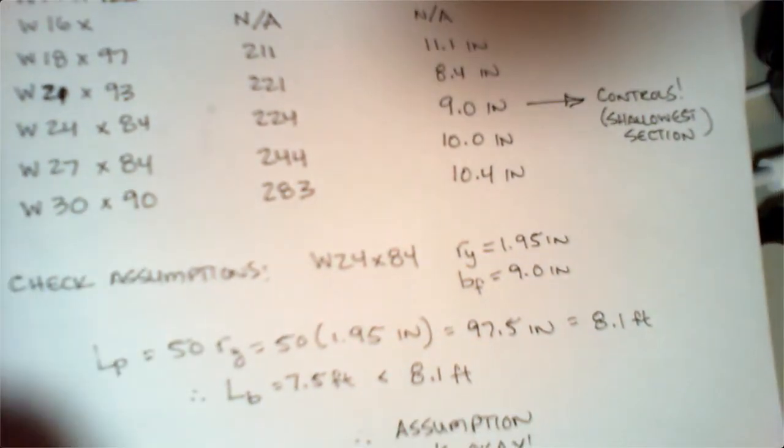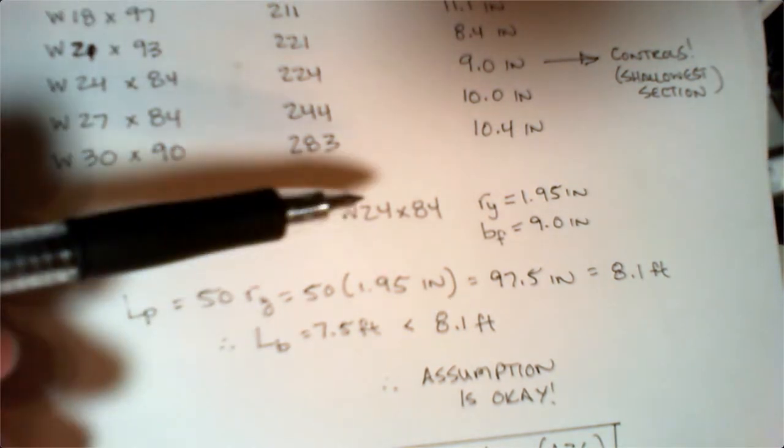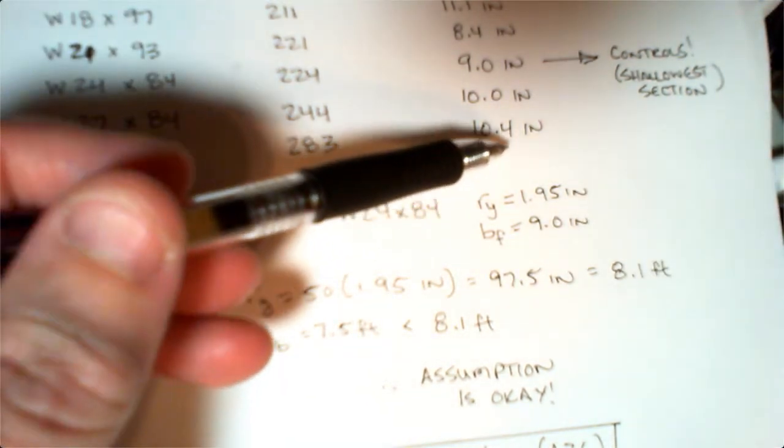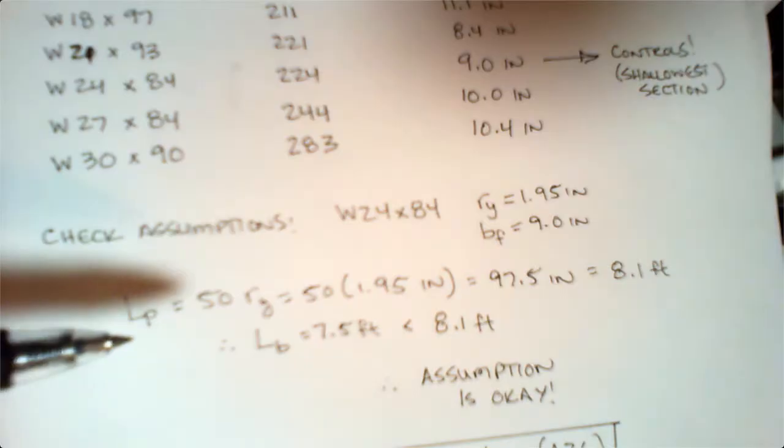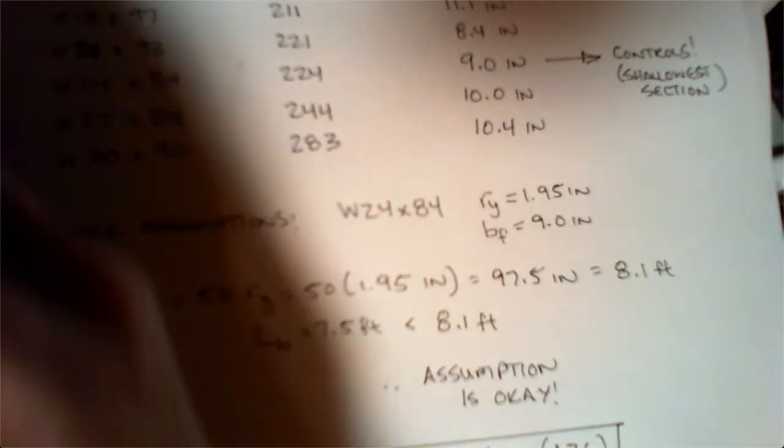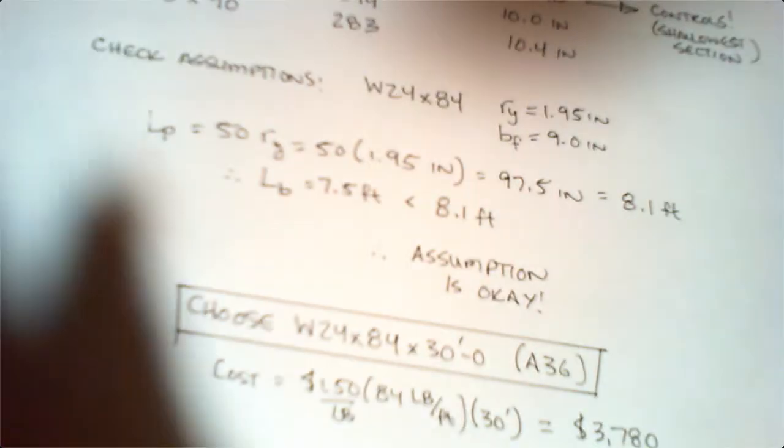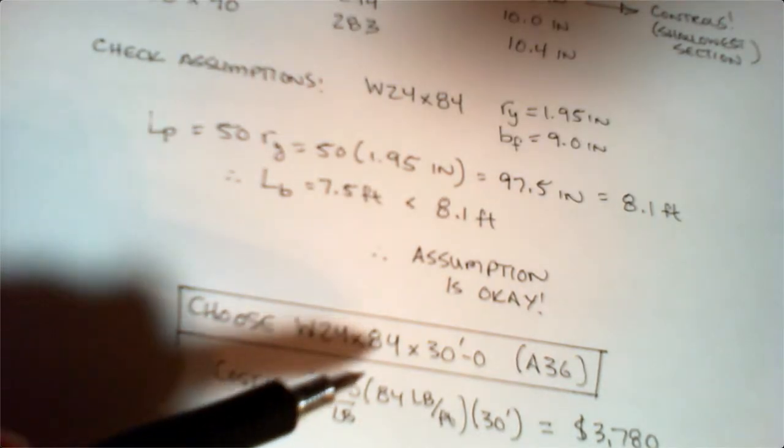Generally, the rule of practice is we want to choose the shallower shape unless there's some other reason that forces me into something deeper. That's why we're going to choose this guy. All we have to do now is check our assumptions. Our W24 by 84 has an ry of 1.95, a bf of 9. I can calculate Lp, which ends up being 8.1 feet, which is greater than our 7.5, so we're okay.